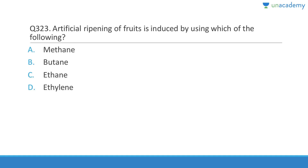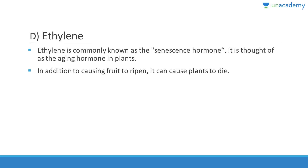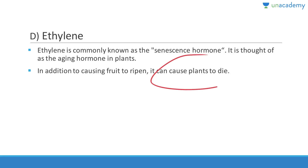Question 323: Artificial ripening of fruits is induced by ethylene. The five plant hormones are auxin, gibberellin, cytokinin, abscisic acid, and ethylene. Ethylene is responsible for artificial ripening — if you keep a ripe banana with raw bananas, they all ripen in 2-3 days. Ethylene is also known as the senescence hormone and can cause plants to die. Answer is D (ethylene).